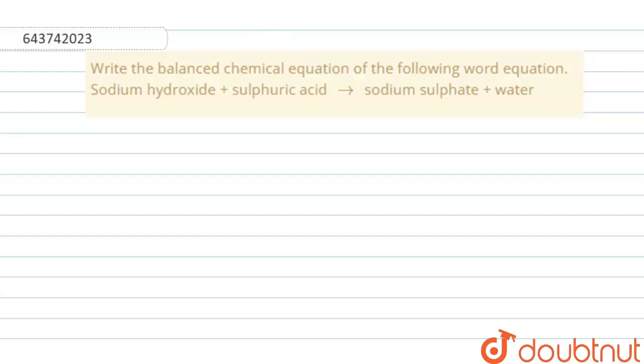We have to write the balanced chemical equation for the following word equation: sodium hydroxide plus sulfuric acid react to form sodium sulfate and water. I have highlighted the reactants with yellow and the products with green.